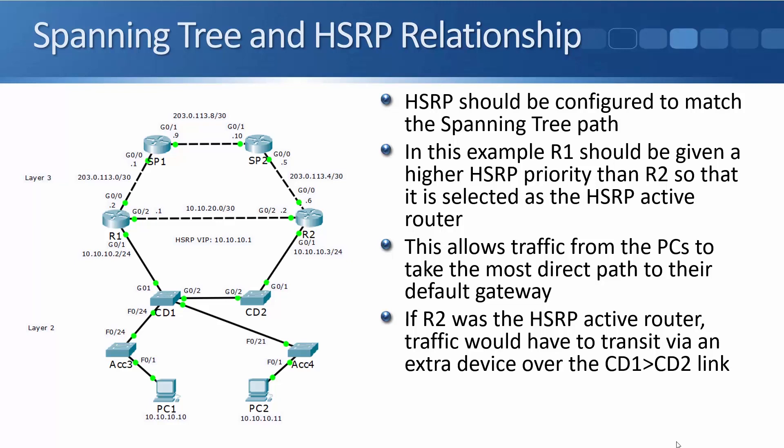I want my HSRP configuration to match the spanning tree path. So in this example, R1 should be given a higher HSRP priority than R2 so that it is selected as the HSRP active router. That allows traffic from the PCs to take the most direct path to their default gateway. If R2 was the HSRP active router, traffic would have to transit via an extra device over the CD1 to CD2 link.